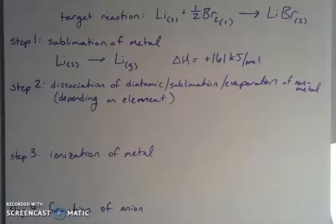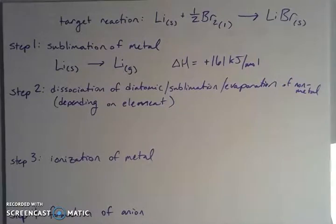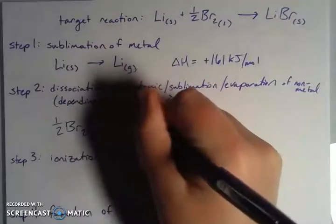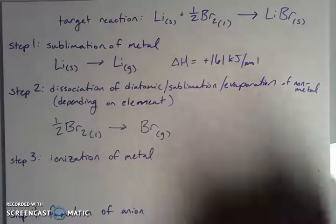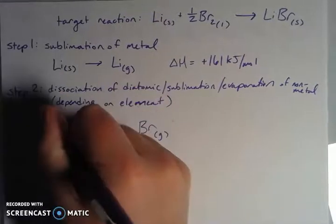Now step two, I need to break apart my diatomic. In this case, I have a diatomic halogen, so I need to break apart my diatomic and then either sublimate it if it's a solid, like iodine, or evaporation, like in the case of bromine. It's going to go from the liquid phase to the gas phase, but I still have to break it apart. I want individual component pieces. So I'm going from one half of my diatomic bromine to a bromine that is in the gas phase.